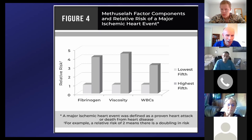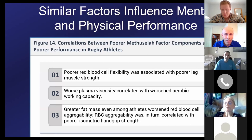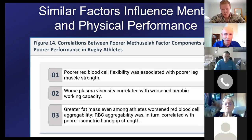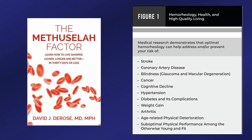These factors are not only important for preventing stroke and heart attack — they can help your mental and physical performance. In highly trained athletes, improving blood fluidity led to more muscle strength, better working capacity, and better fitness measurements. So if you want to perform better physically and mentally, you want to optimize your Methuselah Factor. We are recording these presentations and will post them for you.